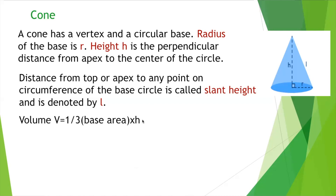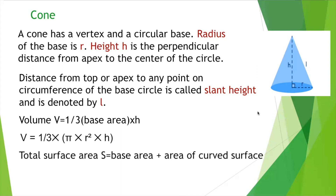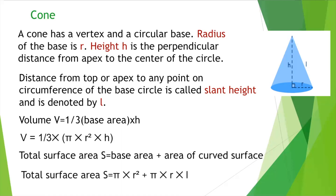The volume of a cone is one third times base area times height. Since the base is a circle, volume equals one third pi R squared times H. The total surface area S equals the base area plus the area of the curved surface: pi R squared plus pi R L.